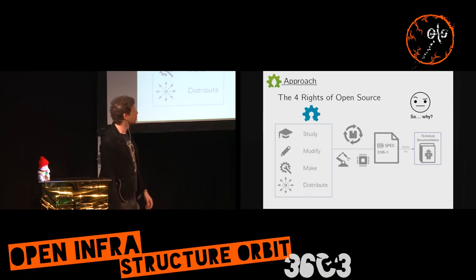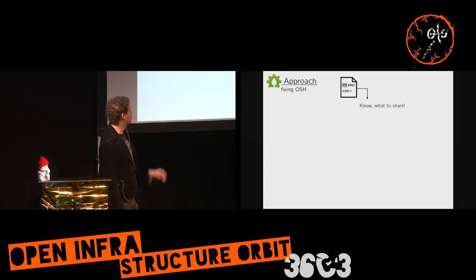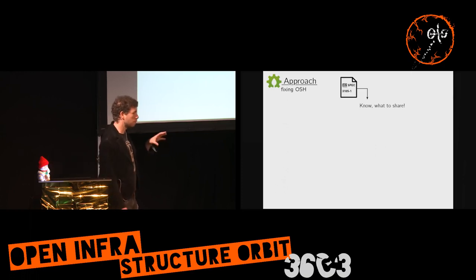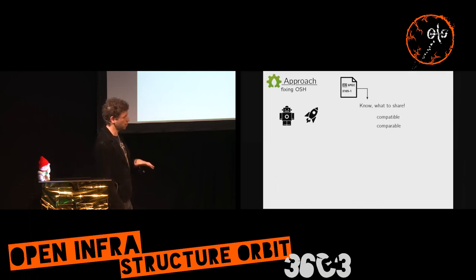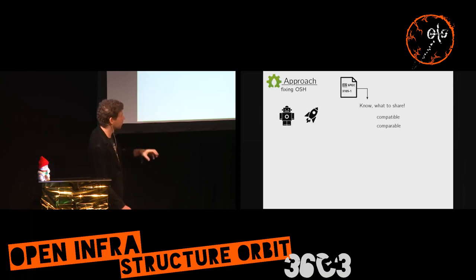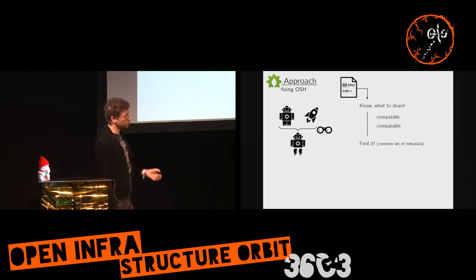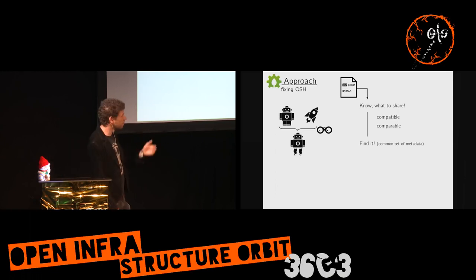Why do we actually need a standard for that — can't people just produce and document open source hardware? First of all, the standard defines what you should share, and apparently that's a huge issue. There are very few projects out there that are well-documented, at least for mechanical open source hardware. Beyond enabling people to make use of your invention, you make technical documentation compatible and comparable, so when you have two well-documented machines you can actually combine both to build a better machine. Second, you can actually find it — there's no use if you publish open source modules around the web if no one can find them.